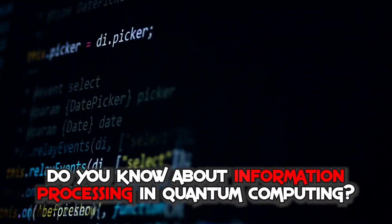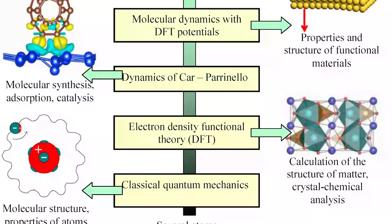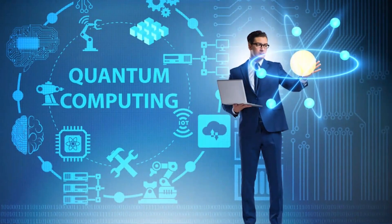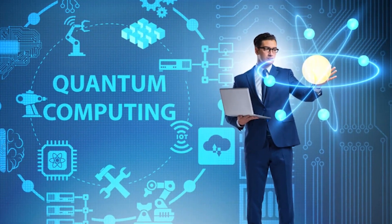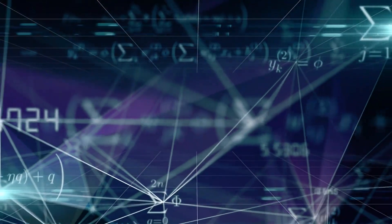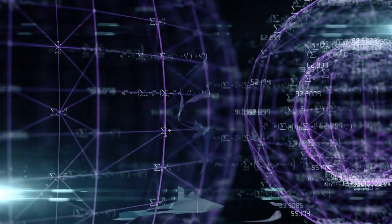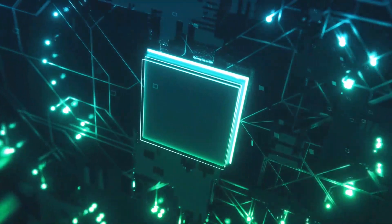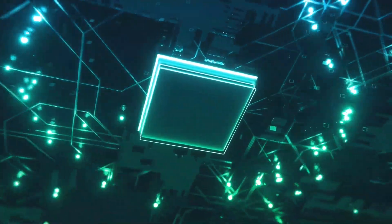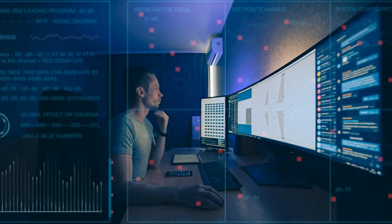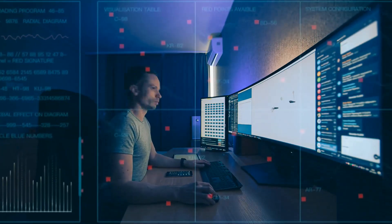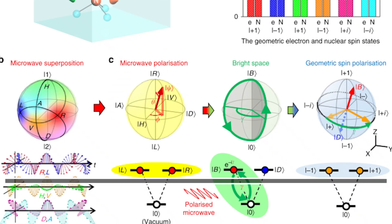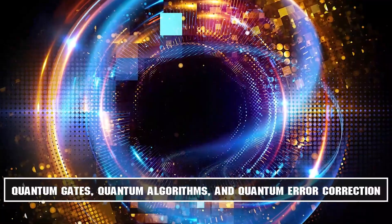Information processing in quantum computing refers to the manipulation and transformation of information using quantum mechanical phenomena. Unlike classical computers that use binary digits, or bits, to represent information, quantum computers use quantum bits, or qubits, which can exist in multiple states simultaneously due to quantum superposition. This property allows quantum computers to perform certain calculations much faster than classical computers. Quantum computers use a variety of techniques to process information, including quantum gates, quantum algorithms, and quantum error correction.